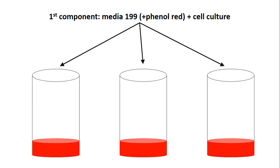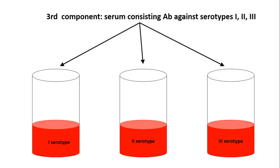Steps of reaction: We take three tubes and add cell culture in the media 199 containing phenol red. Next step, we add virus containing material.